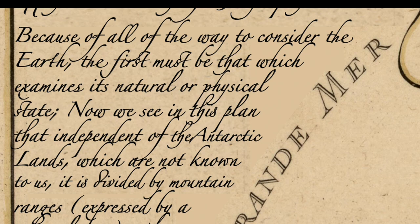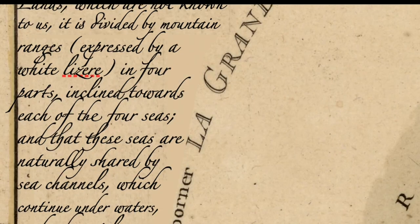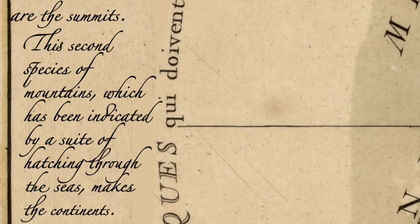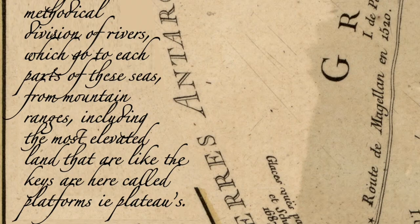We see in this plan that independent of the Antarctic lands which are not known to us, it is divided by mountain ranges, expressed by a white lazare, in four parts, tilted towards each of the four seas, and that these seas are naturally shared by sea channels which continue under waters and whose isles are the summits. This second species of mountains, indicated by a suite of hatching through the seas, makes the continents. This plan still gives the methodical division of rivers which go to each part of these seas from mountain ranges, including the most elevated land that are like the Keys, here called platforms or plateaus.